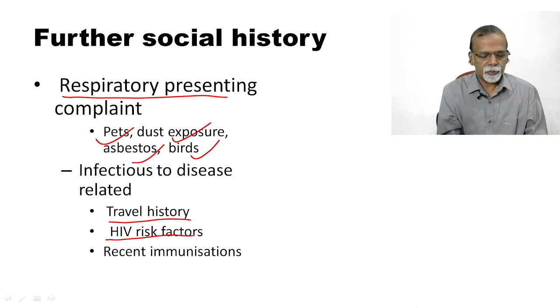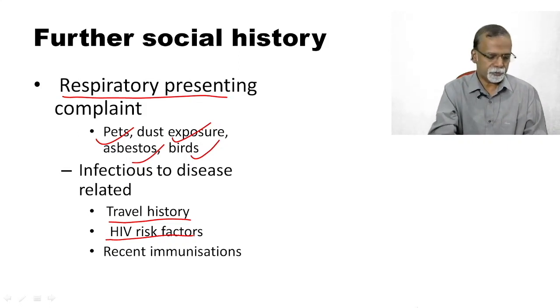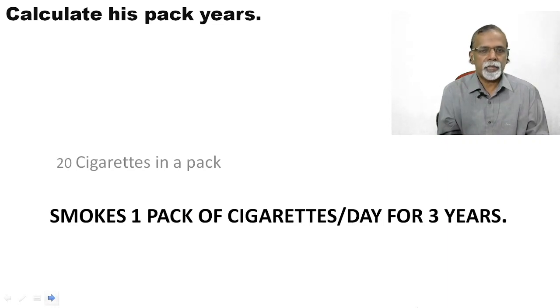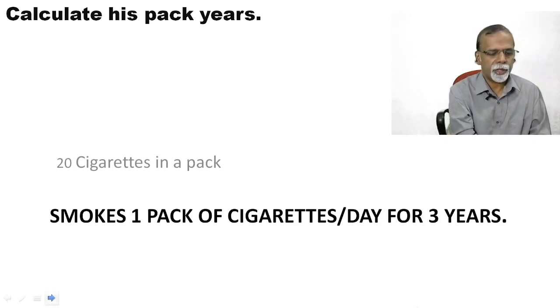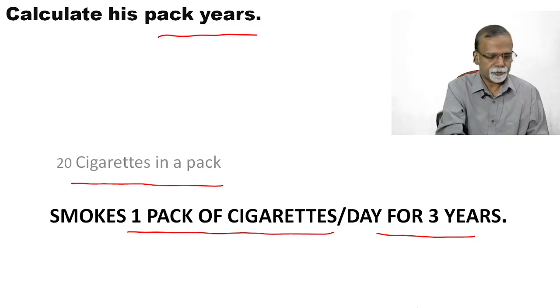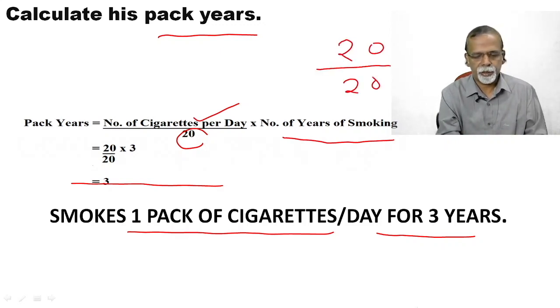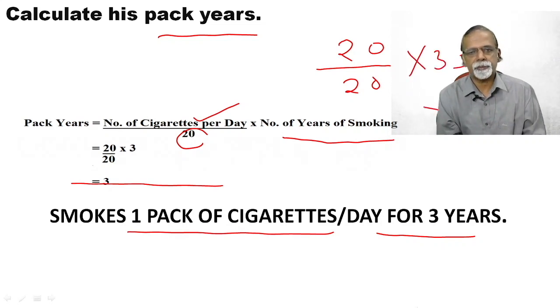Travel history, risk factors for HIV, that is multiple sexual exposures, multiple partners, that should be asked for. And you should be careful in eliciting the sexual history. Only once you get a rapport, then you go for elicitation of the sexual history. Regarding smoking, rather than telling he is a smoker, try to calculate the pack-years. Suppose someone smokes one pack of cigarettes per day for 3 years. Usually 20 cigarettes are in a packet. So the calculation of pack-years is number of cigarettes per day divided by 20 into number of years. So here, 20 cigarettes divided by 20, that is one pack into 3 years is equal to 3 pack-years.